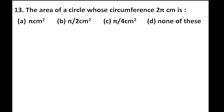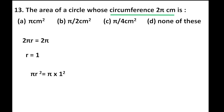The area of a circle whose circumference is 2π cm. Circumference 2πr = 2π, so r = 1. Area = πr² = π × 1² = π. So the first option is correct.